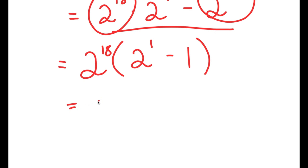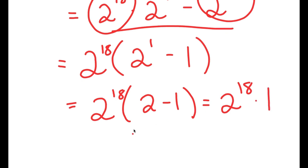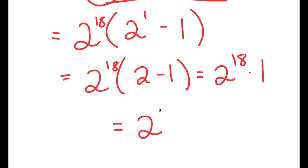This is equal to 2 to the power of 18 times — well, 2 to the power of 1 is 2 — so I get 2 minus 1, which equals 2 to the power of 18 times 1, which is equal to 2 to the power of 18. So I get 2 to the power of 18 as my answer.